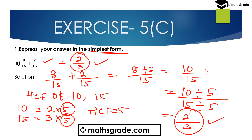So 8 divided by 15 plus 2 divided by 15 equals 2 divided by 3, which is in the simplest form. When we add two like fractions, just add the numerators divided by the denominator. If the result is not in the simplest form, find the highest common factor between numerator and denominator, then divide both by it to get the simplest form.